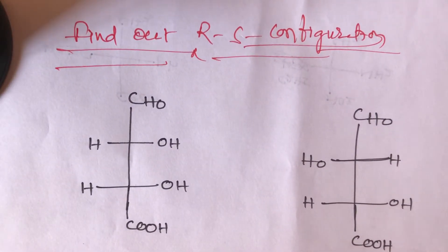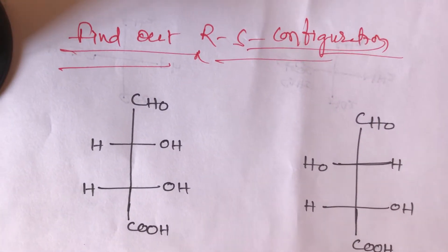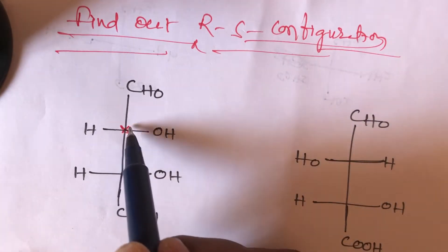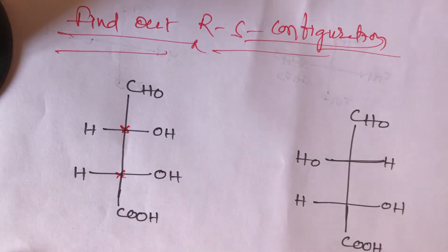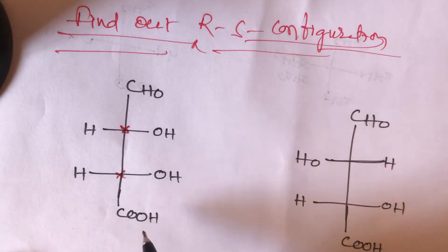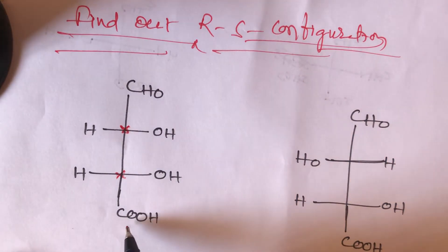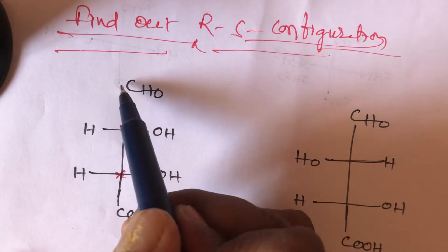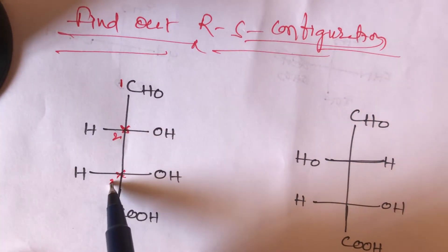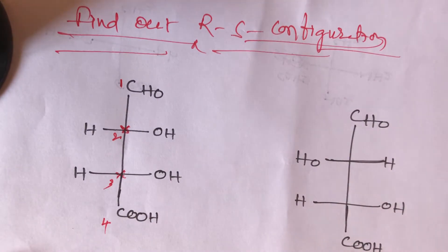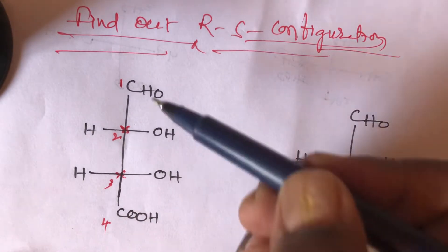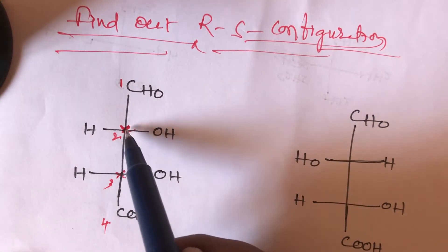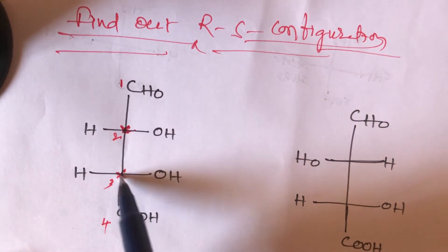Students, find out the RS configuration for the following structures. In the first structure there are two chiral centers, and in the second there is one chiral center each. Numbering should start from the top, with first priority going to the aldehyde (CHO) group. This is the first carbon, then second carbon, third carbon — the second carbon and third carbon are both chiral carbons.